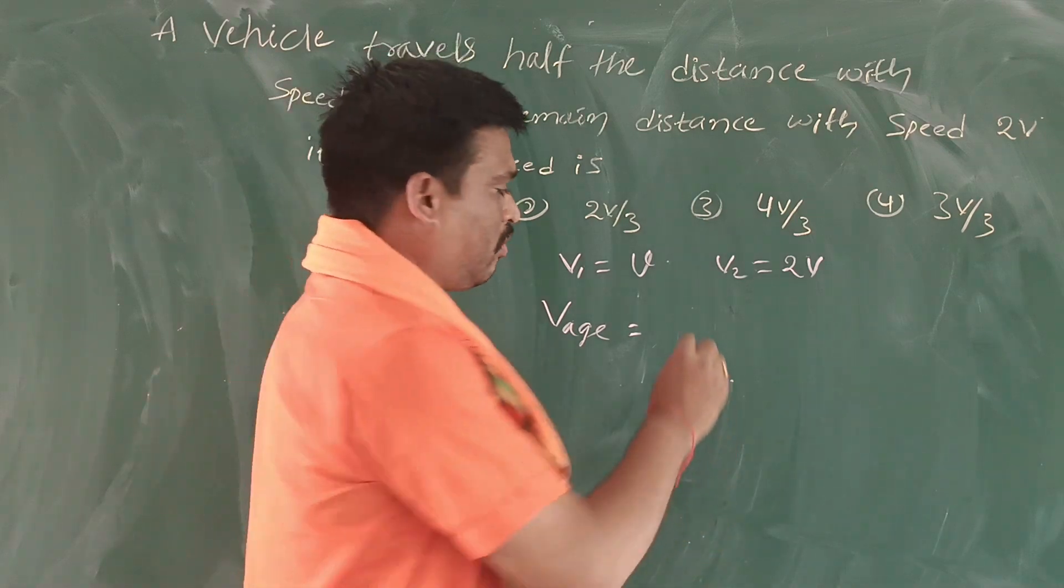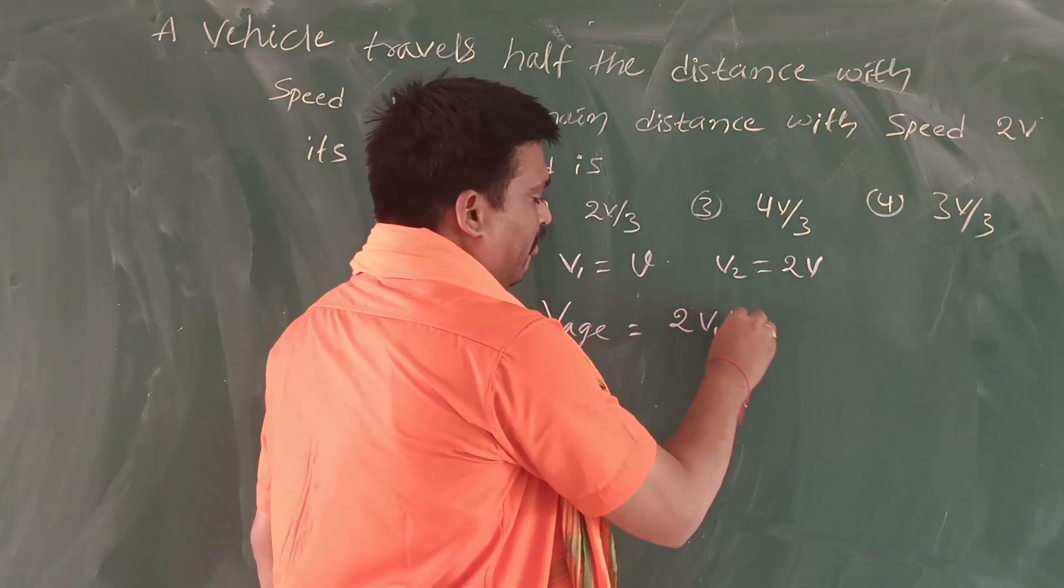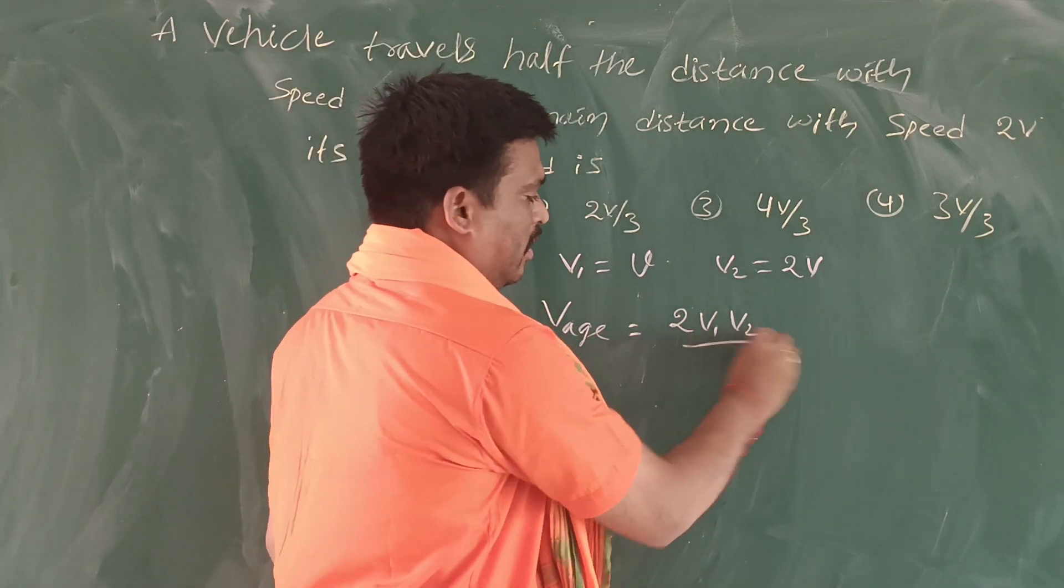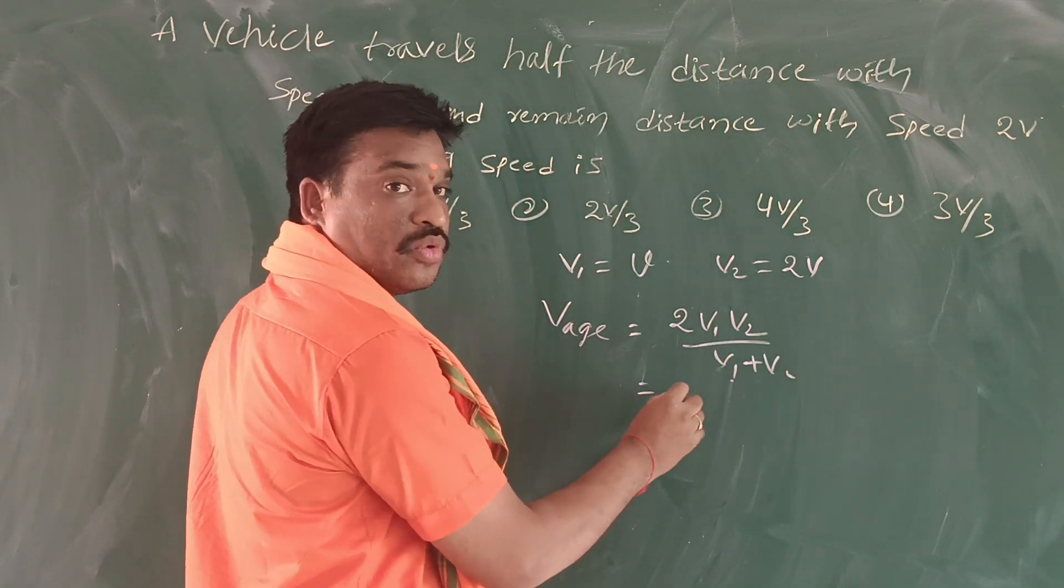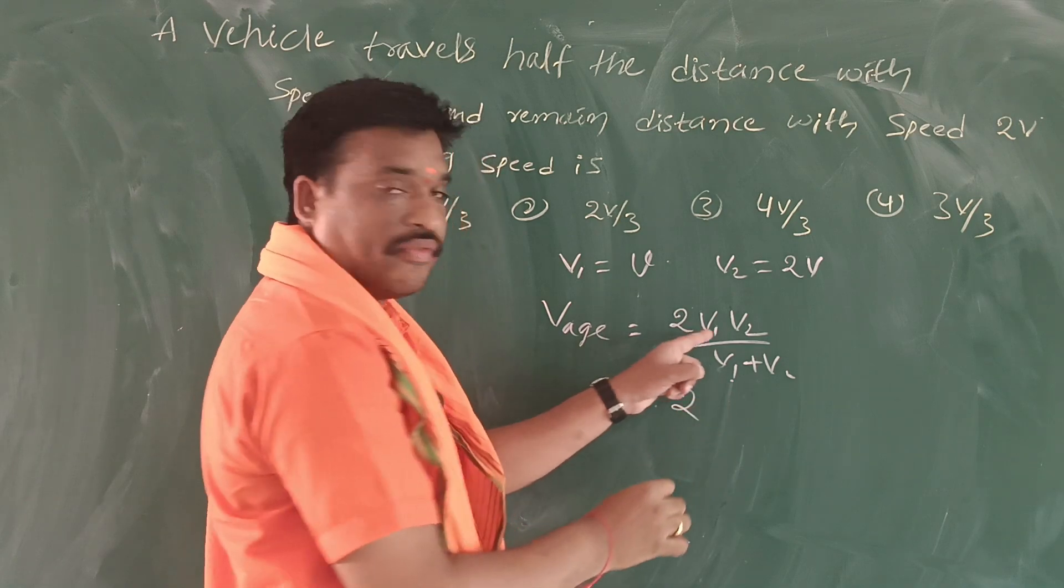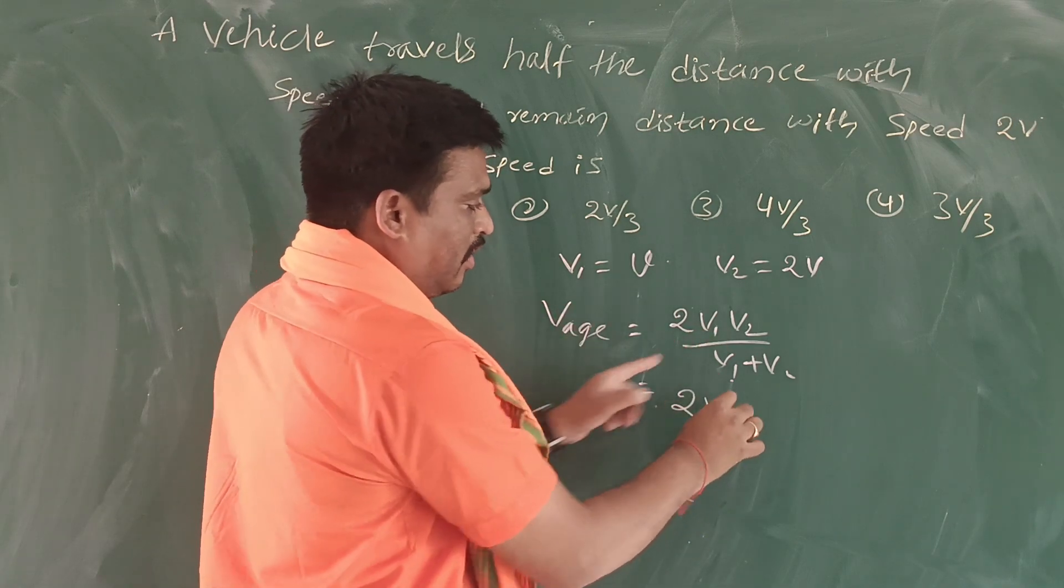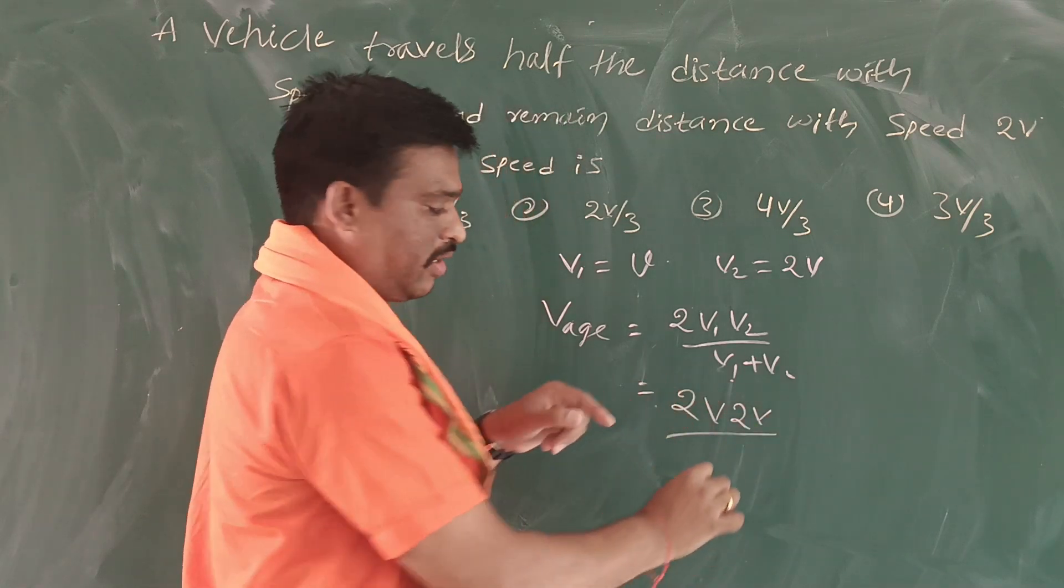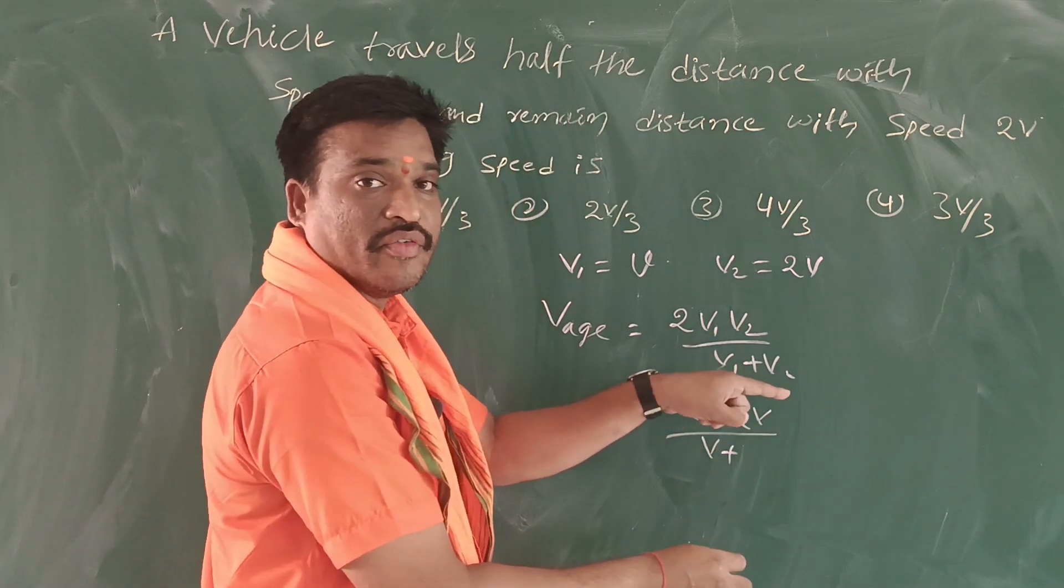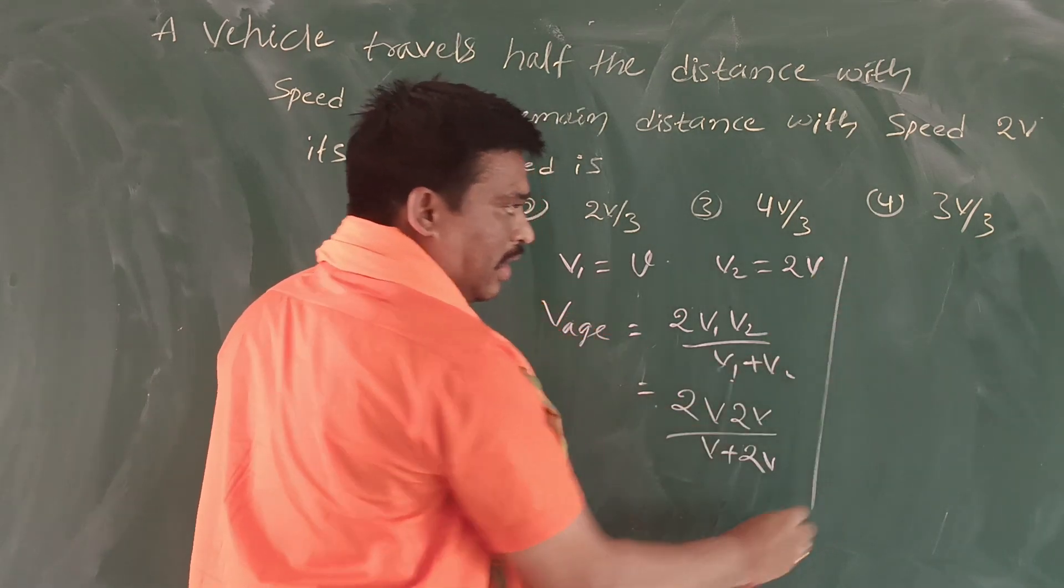Average speed formula is 2v1v2 divided by v1 plus v2. Now substitute: 2 times v times 2v divided by v plus 2v.